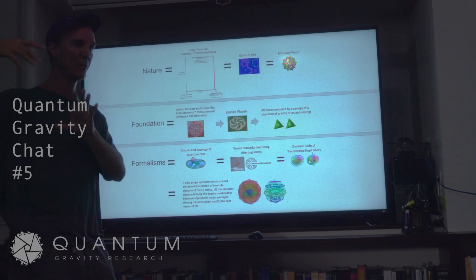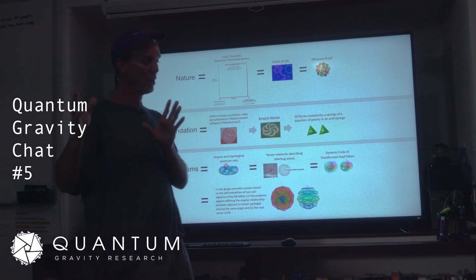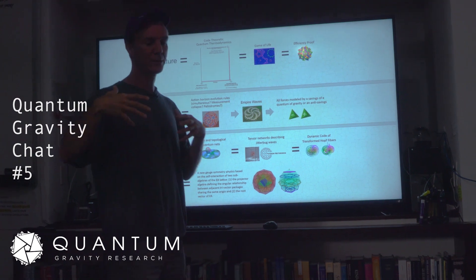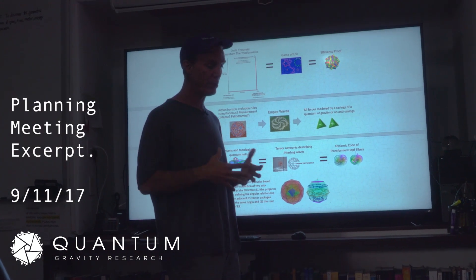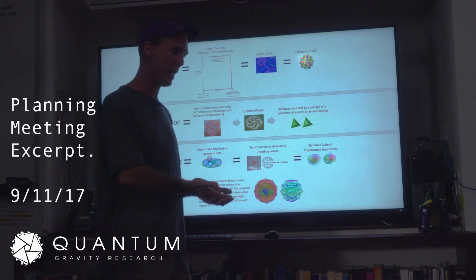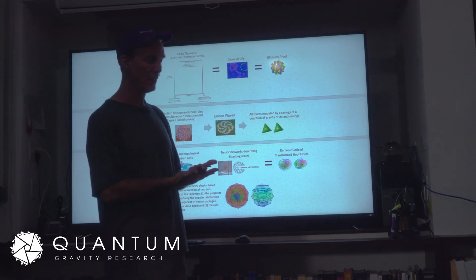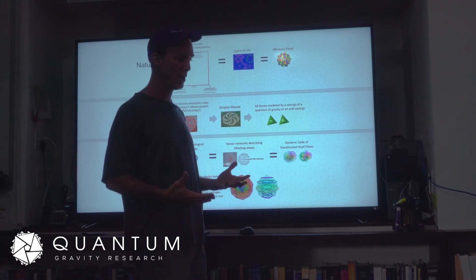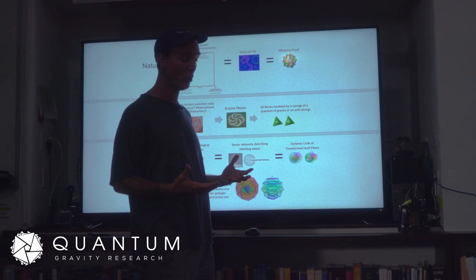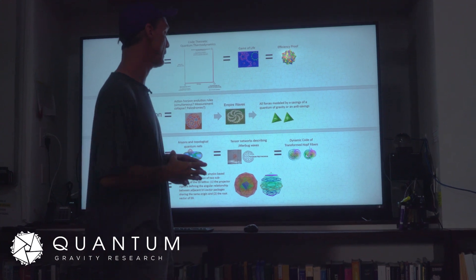When you take the E8 lattice, which is not a code, and you operate it with the hyper-projection vectors which come from a four-dimensional subspace of E8, you break the symmetry of E8, but you also create a code—a non-deterministic code that is non-local and non-deterministic.